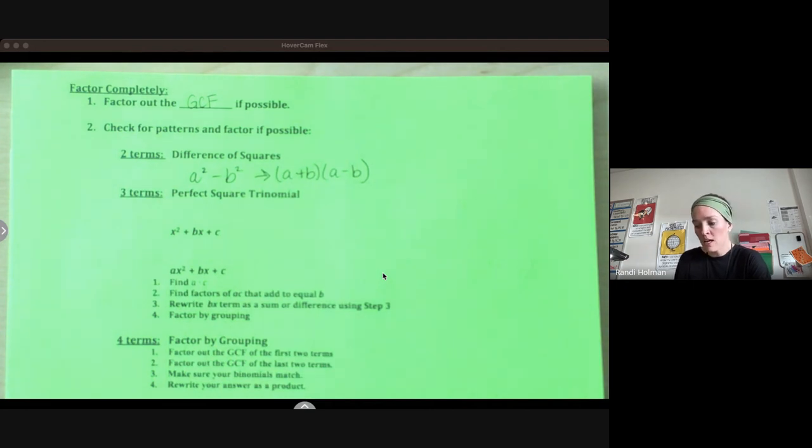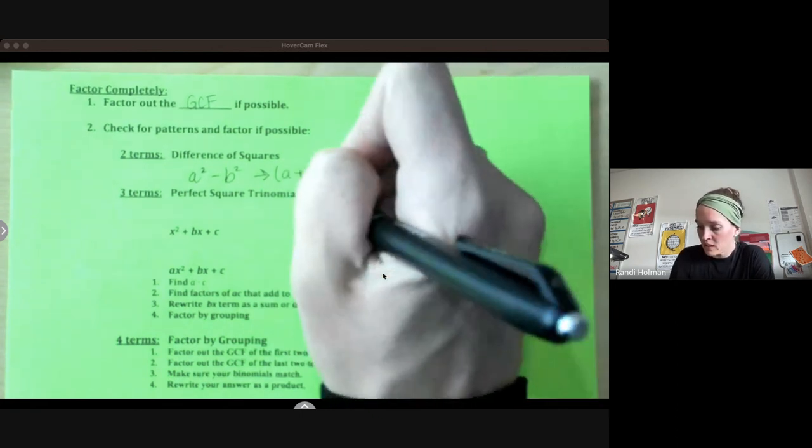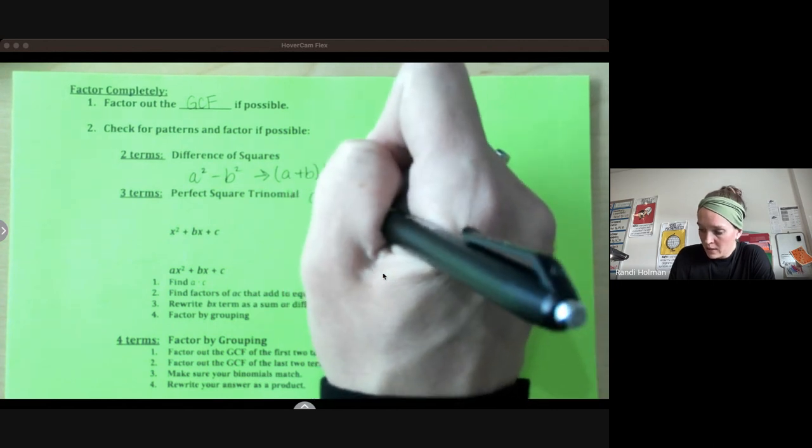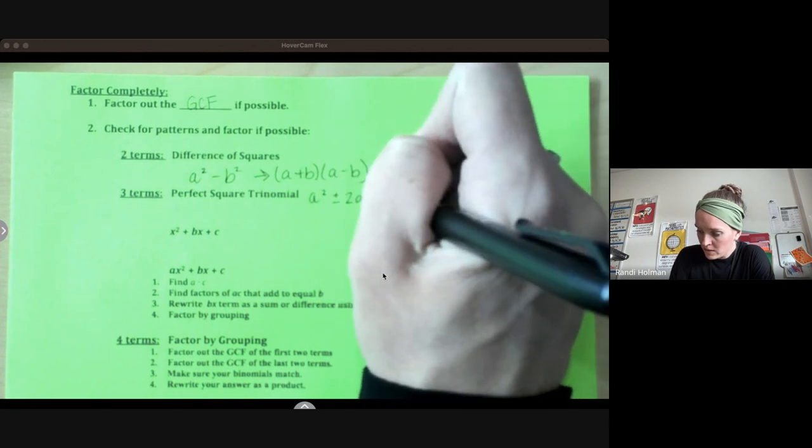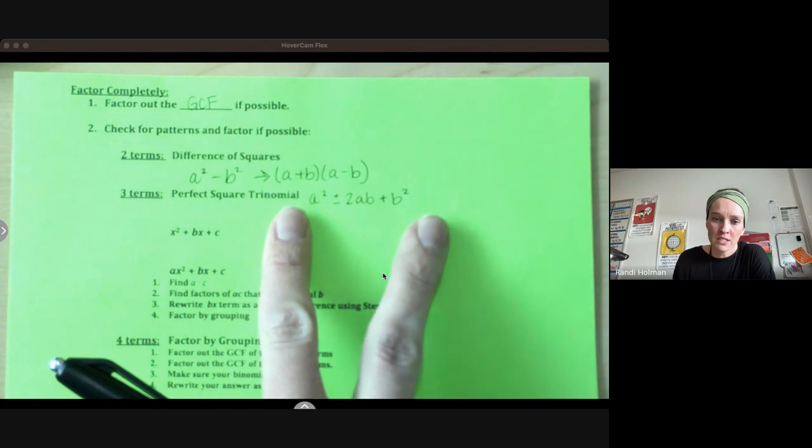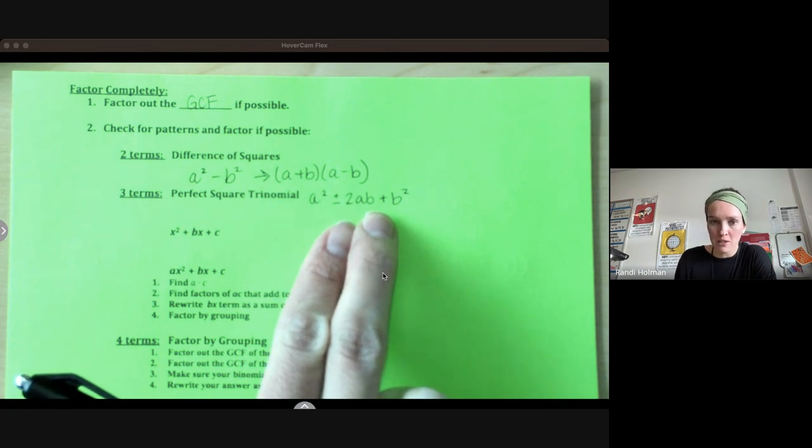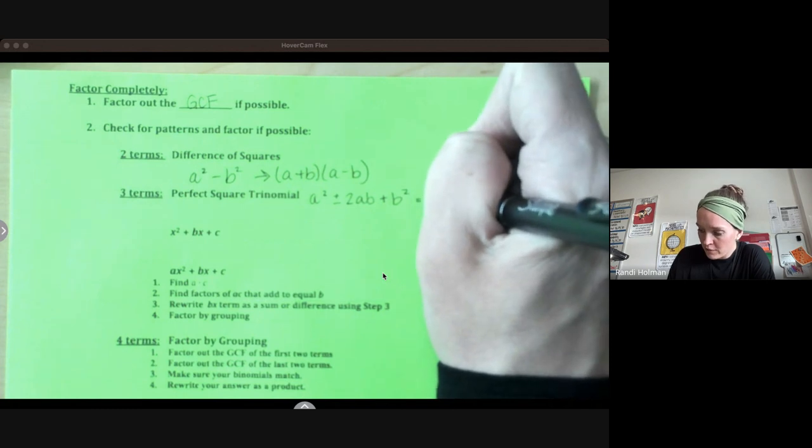The other pattern we're looking for is a perfect square trinomial. So if we have a² plus or minus 2ab plus b², start by looking at your first and last terms. If they're both perfect squares, check to see if the middle term is two of the square roots multiplied together.